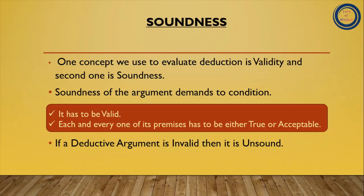Next: soundness. One concept we use to evaluate deduction is validity, and the second one is soundness. Soundness kya hai? Soundness of the argument demands two conditions. First, it has to be valid — valid matlab jo hum pichhe parh chuke hain, ek argument valid hona chahiye, meaning if all premises are true the conclusion must be true. And the second condition: each and every one of its premises has to be either true or acceptable.